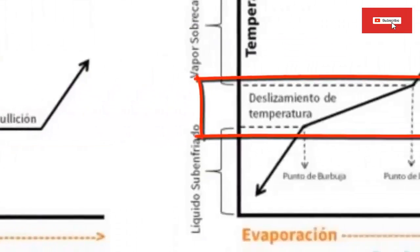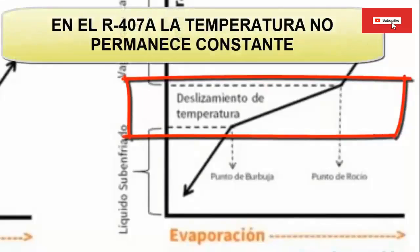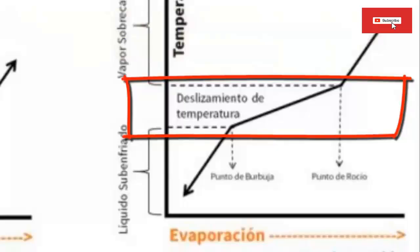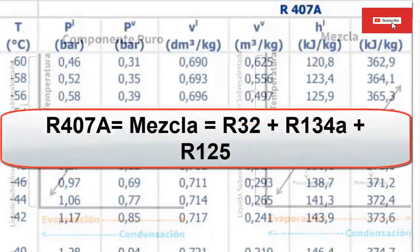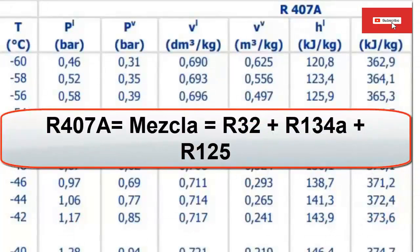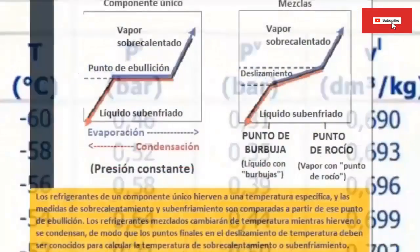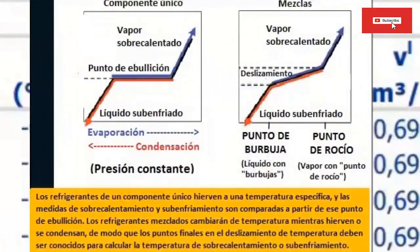The temperature glide of R407A occurs because it is not internally made up of a single gas. It is made up of a mixture of gases: R134A at 40%, R125 at 40%, and R32 at 20%. These gases have different boiling temperatures, which causes the compositions of the liquid and vapor phase to be different. In a zeotropic mixture such as R407A, the change of state of the most volatile compounds occurs first, causing the temperature to increase throughout the phase change until complete evaporation occurs.